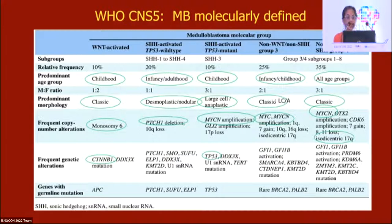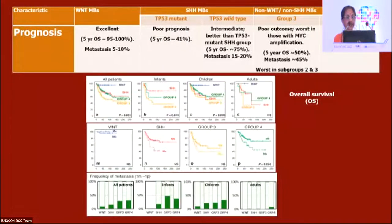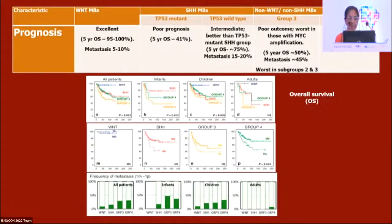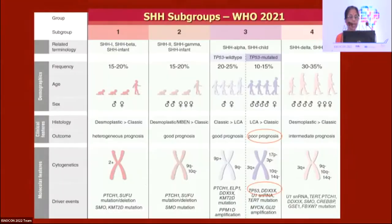Prognostic significance: WNT-activated has excellent prognosis. Two poor prognosis categories: p53-mutant SHH-activated and Group 3 non-WNT non-SHH — these correlate with large cell anaplastic histology and MYC amplifications. P53-wild-type SHH is intermediate. Group 4 is also intermediate. Five-year overall survival differs substantially across molecular groups, which is the key prognostic importance of molecular subgrouping.